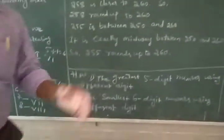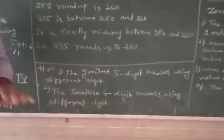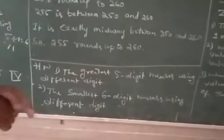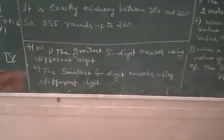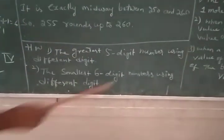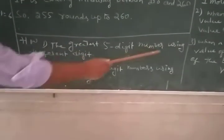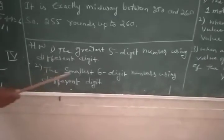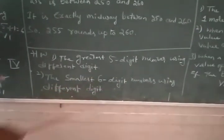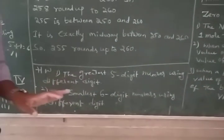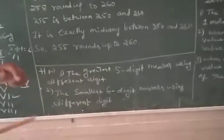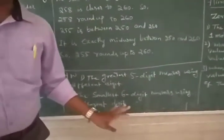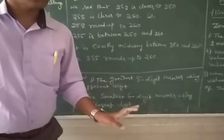OK students, have you got this lesson? I think you understand. Now for homework: write the greatest 5-digit number using different digits, and the smallest 6-digit number using different digits. Write and submit to your teacher. Thank you, friends.